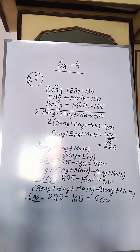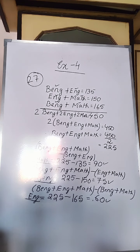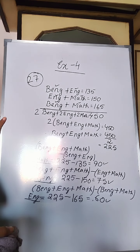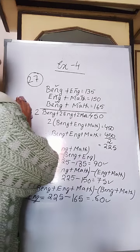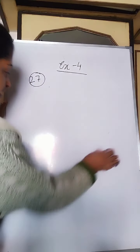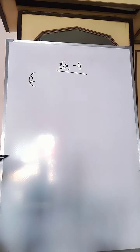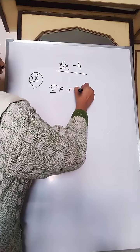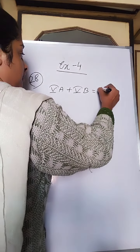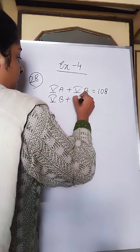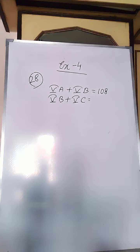Now another sum is given in this exercise — sum number 28. It is the same type of problem but with different values. In a school, 5A plus 5B contains 108 students, 5B plus 5C contains 106 students, and 5A plus 5C contains 102 students. The same method will be followed.